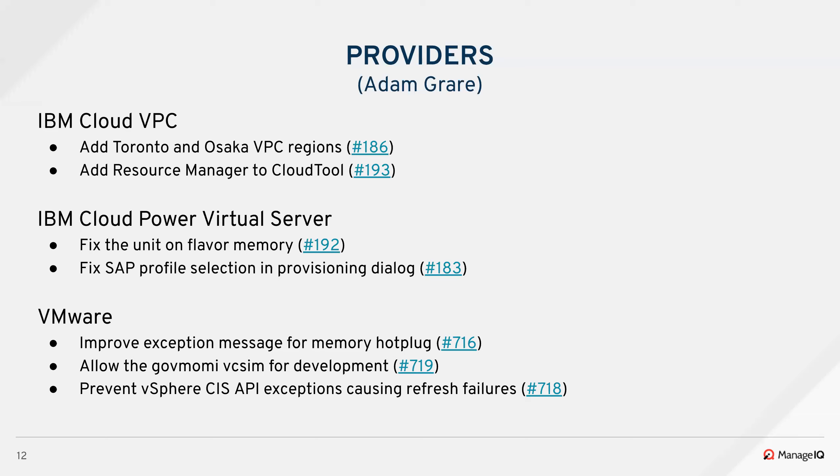For VMware, there was a community contribution to improve the exception message in memory hot plug. When reconfiguring a VM, it didn't make it obvious that the issue was that the VM was currently running, and that if you powered the VM off you'd be able to add the memory — a nice enhancement from our users. We also made enhancements to support using the Go VC simulator, which is the replacement for the old vSphere 5.5 simulator. There were a couple of things missing that we had to fix in our refresh, and this also allows us to use newer API types such as NSX-T switches, added only recently in 6.0, which weren't available in the old simulator.